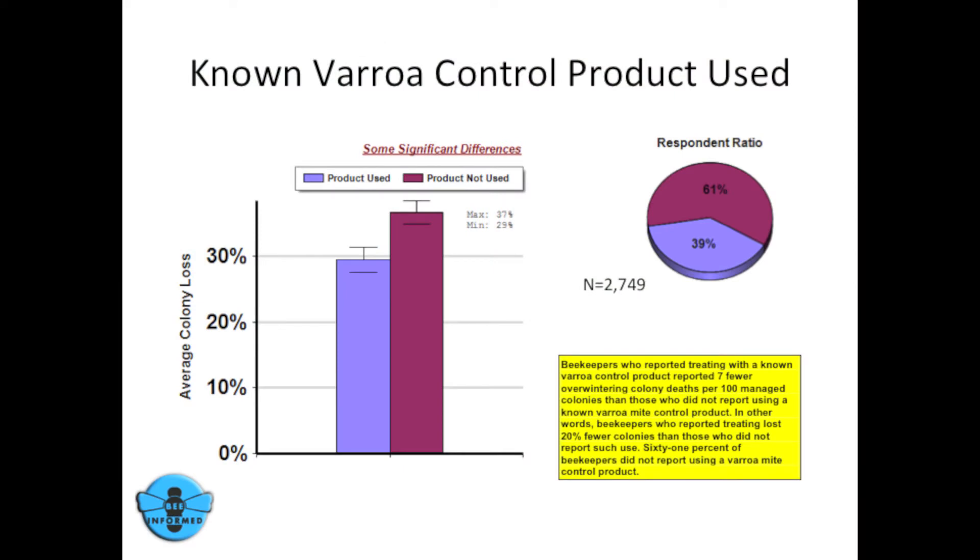Those people who did not use a known varroa mite control product lost significantly more colonies than those who did. Beekeepers who did not use a known varroa mite control product lost 20% more colonies.